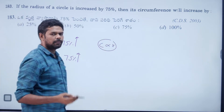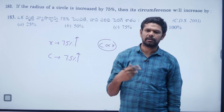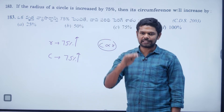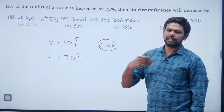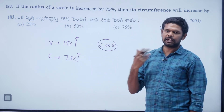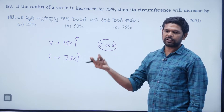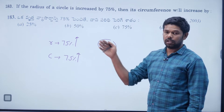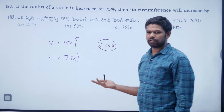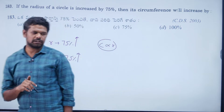If the radius increases by 75%, the perimeter also increases by 75%. Note: 10% increase means 10% increase in circumference; double means 2 times; 5 times means 5 times. We can solve it directly using the proportionality.